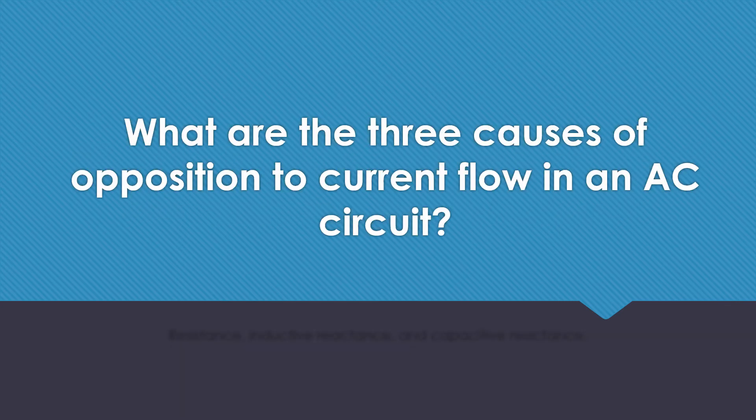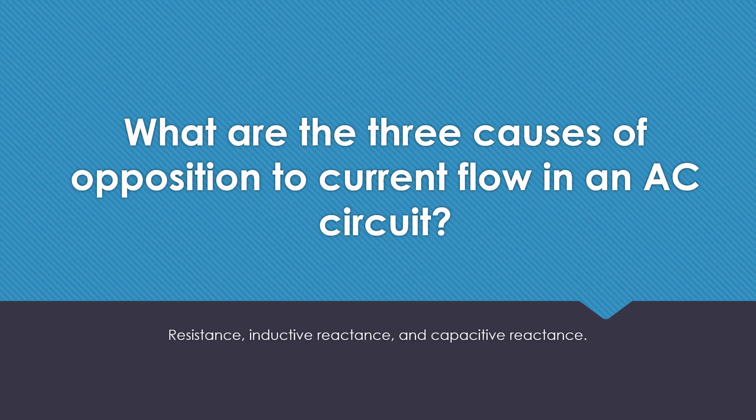What are the three causes of opposition to current flow in an AC circuit? Resistance, inductive reactance, and capacitive reactance.